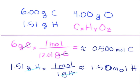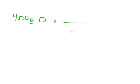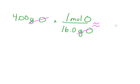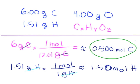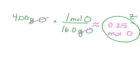For oxygen: 4.00 grams divided by 16.0 grams per mole gives approximately 0.25 moles of oxygen. So now we just put those numbers into the formula: C of 0.5, H of 1.5, and O of 0.25.